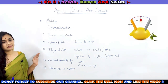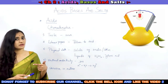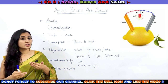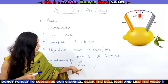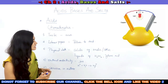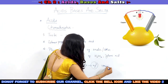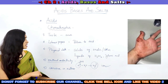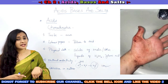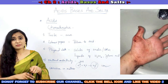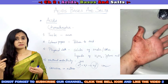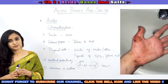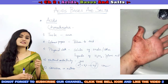Coming to electrical conductivity, acids are good conductors because when you dissolve an acid in water it produces H+ ions, which combine with water to produce hydronium ions. These ions are responsible for the conduction of electricity. Acids are also corrosive in nature — if some acids fall on your skin, it will cause a burning sensation or may damage your skin completely. If it falls on clothes, it will start making holes. So you have to be very careful when dealing with acids.